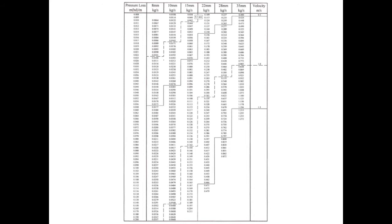Let's take a 15mm internal diameter pipe for section 1 and see what our pressure loss would be for our calculated flow rate of 0.08 liters per second. It turns out that the corresponding loss using a 15mm copper pipe, with a flow rate of 0.08 liters per second and complying with the water velocity of less than 1 m/s, is in actual fact 0.03 meters head.